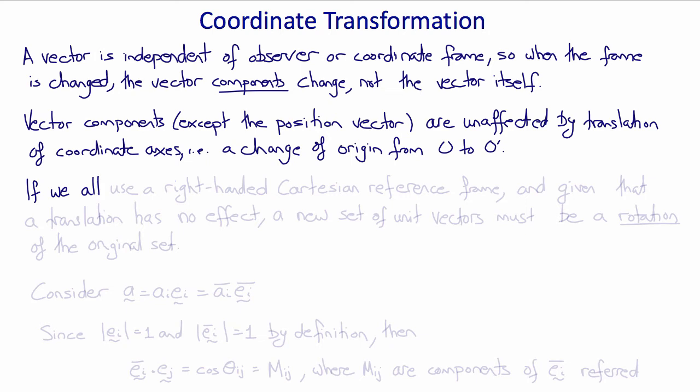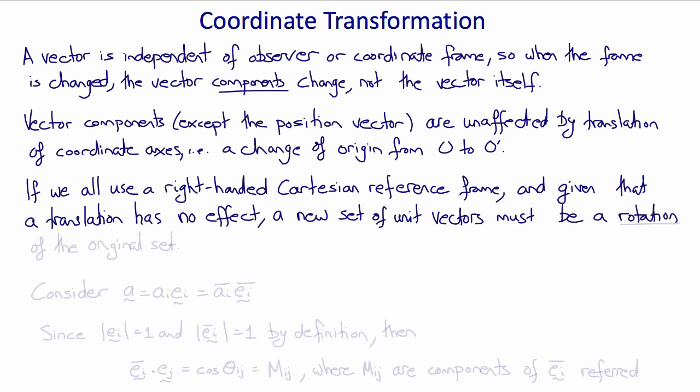Now if all observers agree to use a right-handed Cartesian reference frame, and given that a translation of the reference frame, a change of origin alone, has no effect, then a new set of unit vectors can only be a rotation of the original set of unit vectors.